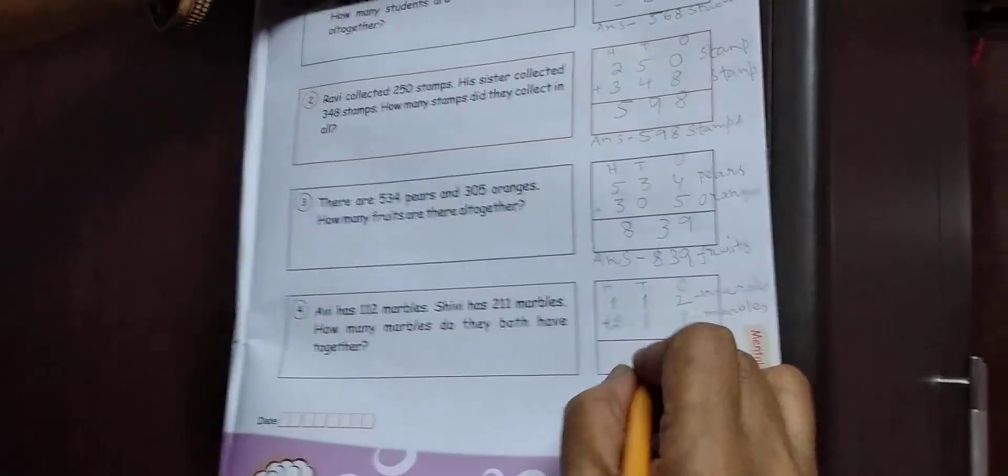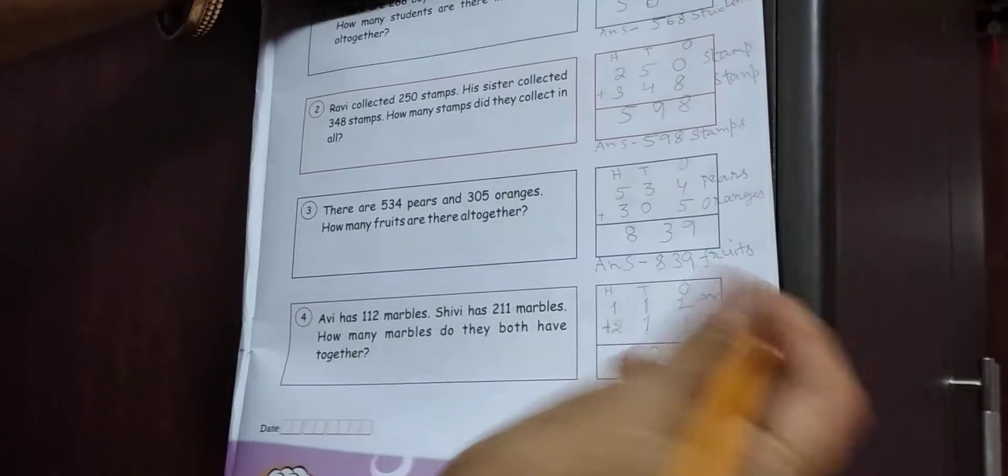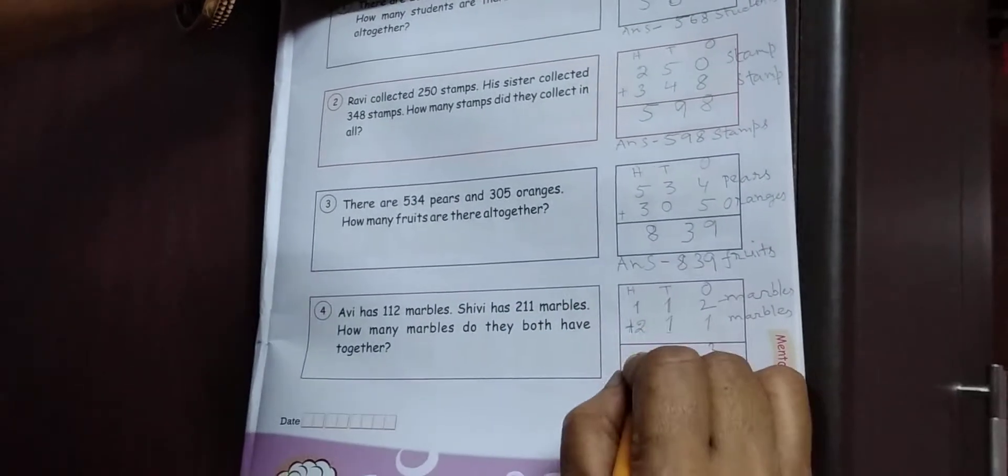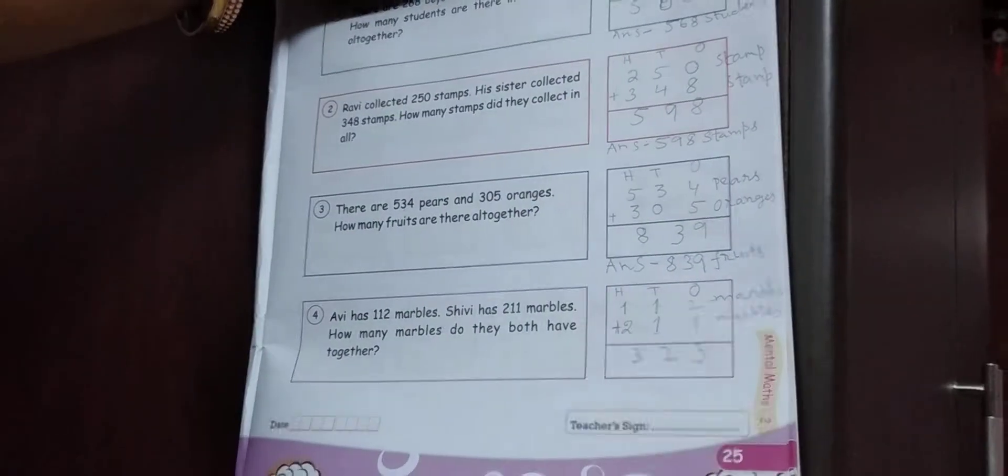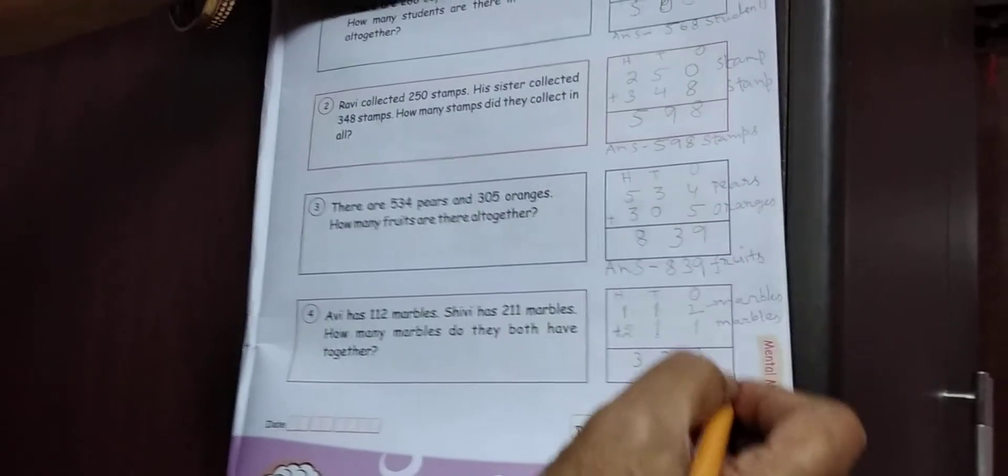Count on, 1, 1, 2. Here, 100 may, 2 and 1. 2 kya bad 1, 3. Students, kitna huwa? 3 hundreds, 2 tens, 3 ones. 3 hundred, 23.